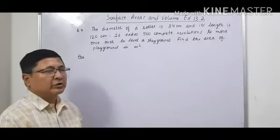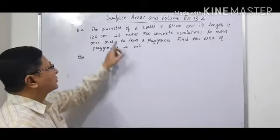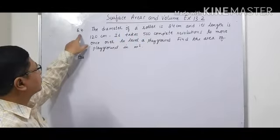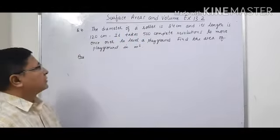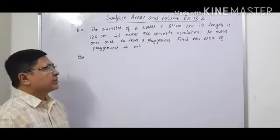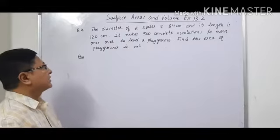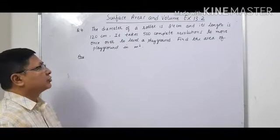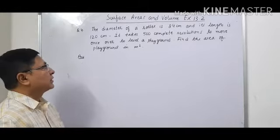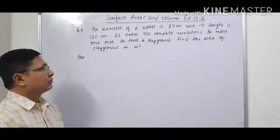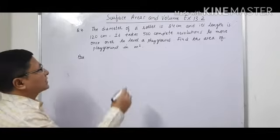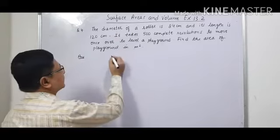Good afternoon students. Today we are going to do the question from exercise 13.2, question number 4. The diameter of a roller is 84 cm and its length is 120 cm. It takes 500 complete revolutions to move once over to level a playground. Find the area of the playground in meter square. Now the roller is having the diameter of 84 cm.